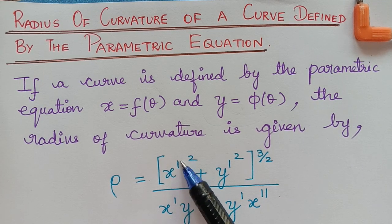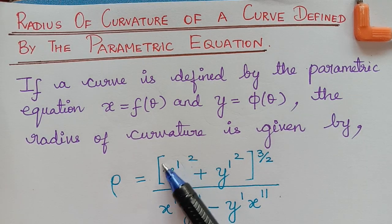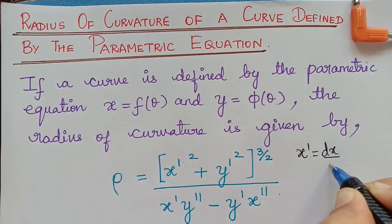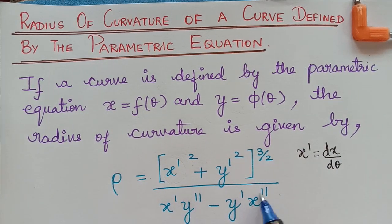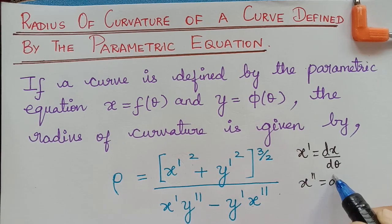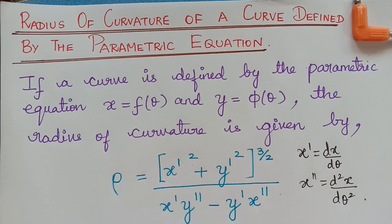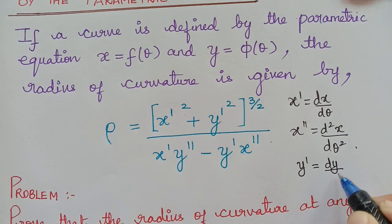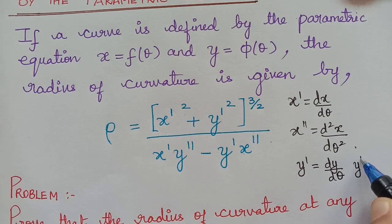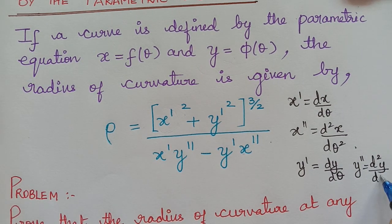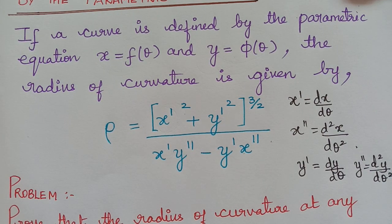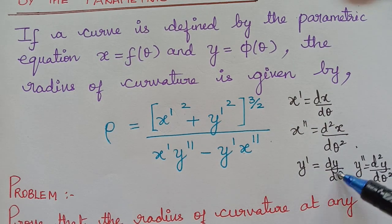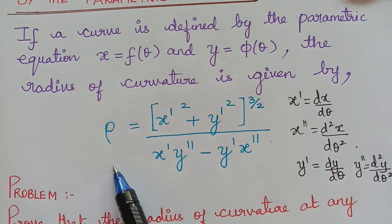Here, x' is the first differentiation of x with respect to theta, so x' = dx/dθ. Then x'' = d²x/dθ². Similarly, y' = dy/dθ and y'' = d²y/dθ². After finding all these, we substitute into the formula to find the radius of curvature.